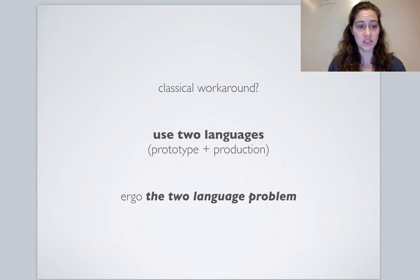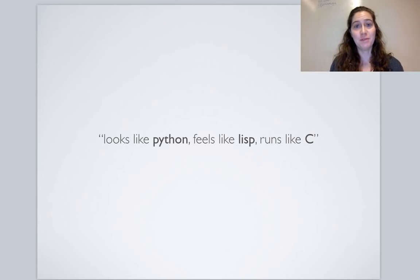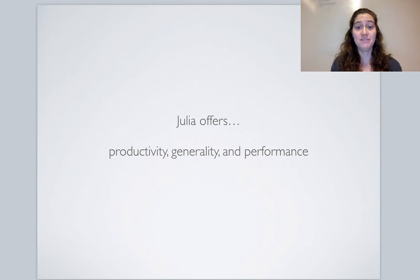This two language problem is why Julia was developed. The tagline of Julia is: it looks like Python, feels like Lisp, and runs like C or Fortran. What this really means is that Julia offers productivity, generality, and performance all together.